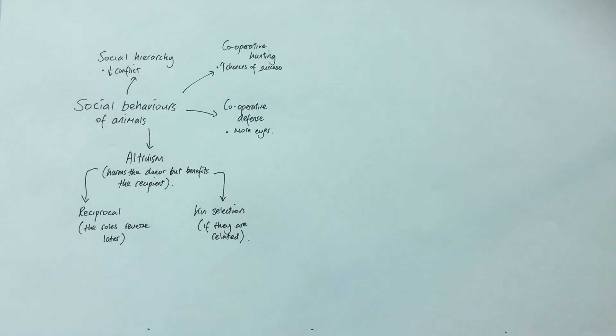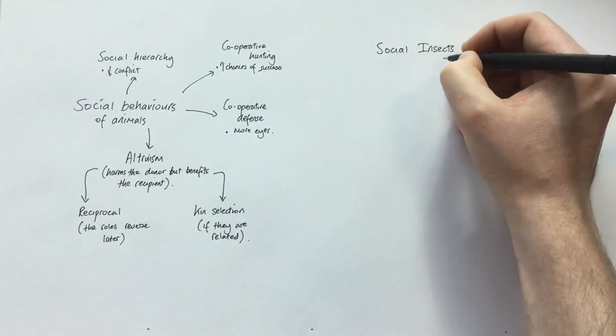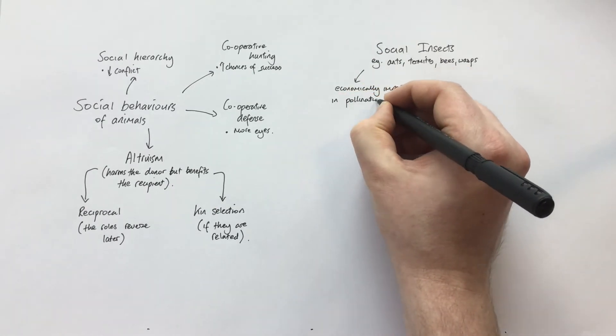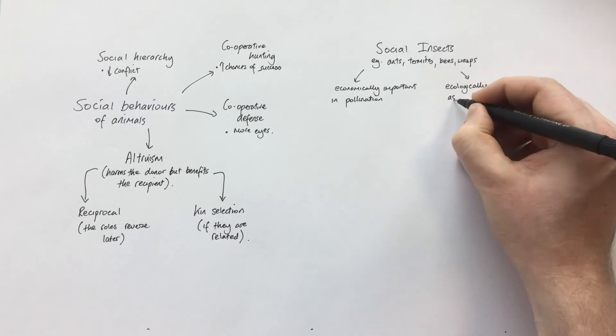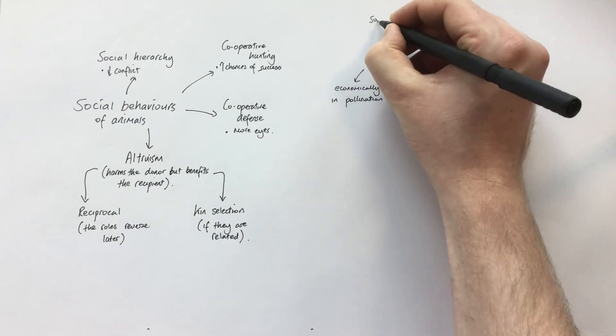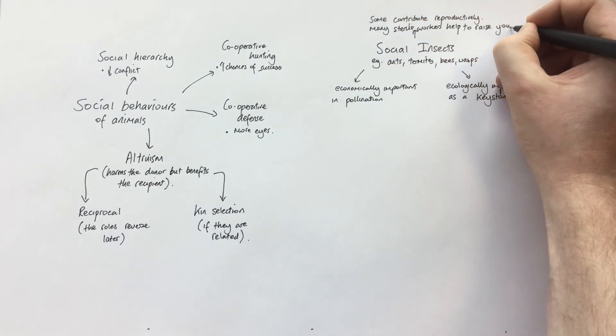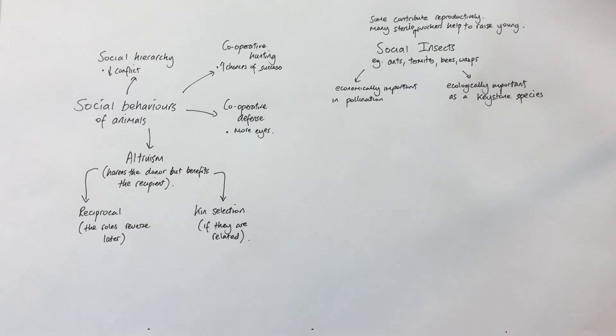So we'll have a look now more specifically at social insects. What's unique to social insects is that a few of them will be contributing reproductively, that's usually your queens and your drones. Most of the social insects in the hive will be sterile and they will be the workers, so they will be looking after the hive or the colony and helping to raise close relatives.